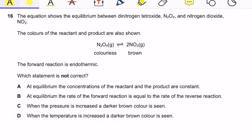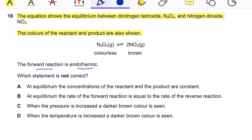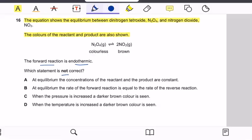Question 16: The equation shows the equilibrium between dinitrogen tetraoxide and nitrogen dioxide. The colors of reactants and products are also shown. The forward reaction is endothermic. Option A — at equilibrium the concentration of reactants and products are constant — is correct. Option B — at equilibrium the rate of forward reaction is equal to the rate of reverse reaction — is also correct.